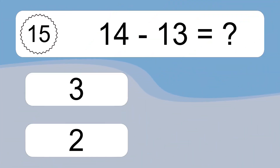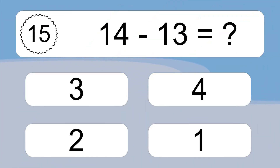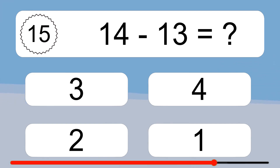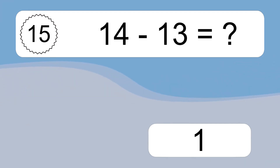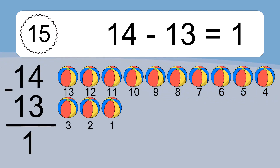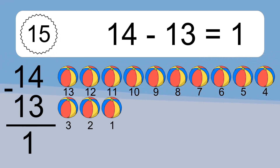14 minus 13 equals what? 14 minus 13 equals 1. Let's count it: 13, 12, 11, 10, 9, 8, 7, 6, 5, 4, 3, 2, 1.